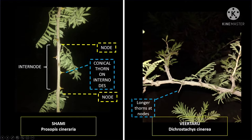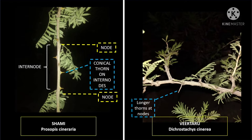You don't need a big tree to identify shami based on these features. In a branch, the place from where a leaf arises is called a node. The space between two nodes is called an internode. One of the typical features of shami is that it has conical thorns on the internodes — not at nodes, but in between them. This is one of the most prominent identification features of the shami plant.